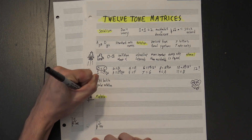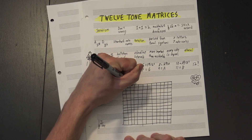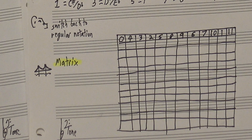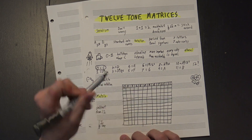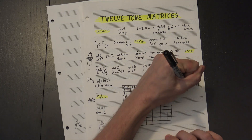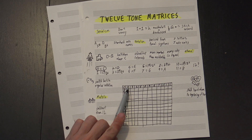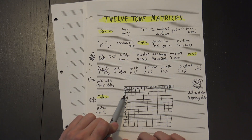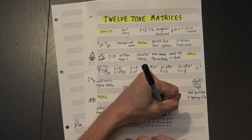The matrix is a useful tool for visualizing the structures available to you, and it works like this. You start with a 12 by 12 grid. In the top line, you write your prime row starting on 0. Then, going down the first column, you write your inversion. A handy trick to find this is to take each number in your prime row and subtract it from 12 — so this 4 inverts to an 8, this 3 becomes a 9, and so on. Then, for each of the remaining squares, you add the number at the top of the column to the one at the beginning of the line. So this 4 plus this 8 would be 12, or 0; this 3 plus 8 is 11; this 4 plus 9 is 13, or 1; and so on. This takes a little time, but once you're done, it should look something like this.